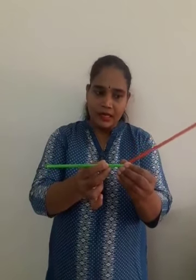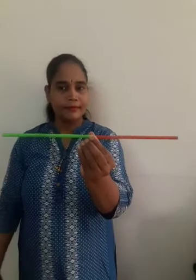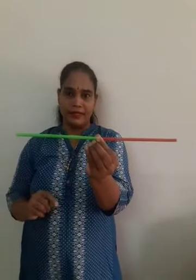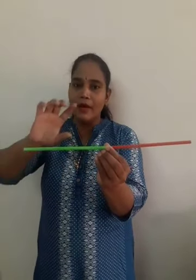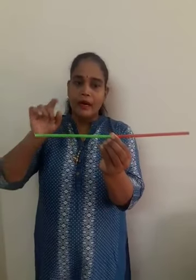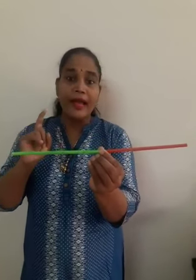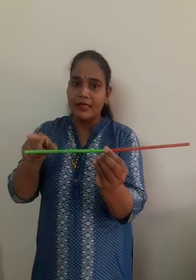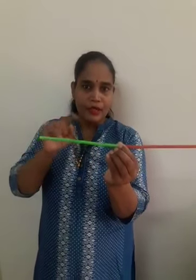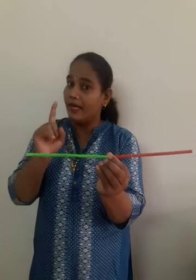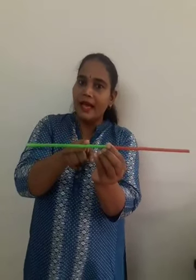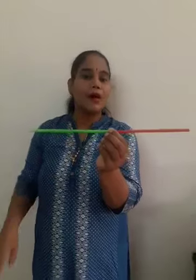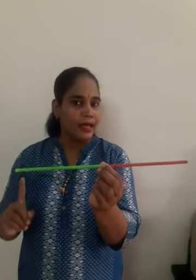Now turn the stick further. One more angle is formed — this is called a straight angle. The protractor is divided into 180 equal parts, in a semicircular shape, from 0 to 180 degree. The measure of this angle is also 180 degree, so it is called a straight angle. If the measure of the angle is 180 degree, then that angle is called a straight angle.